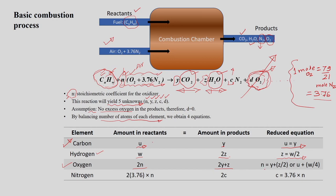Solving for N: N = Y + Z/2, or in terms of the hydrocarbon fuel coefficients, N = U + W/4. This gives us the oxygen balance, and we can determine the number of moles of air required for the combustion process.